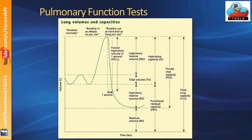During forced exhalation, in the first second you exhale approximately 80 to 85 percent of your volume — this is the forced expiratory volume in the first second, FEV1. If a patient has bronchospasm and increased resistance, like traffic congestion in a parking lot, acceleration takes more time, so less volume is exhaled in the first second. When the ratio of FEV1 to FVC is less than the lower limit of normal, that indicates airway resistance — you are most likely dealing with obstructive lung disease.